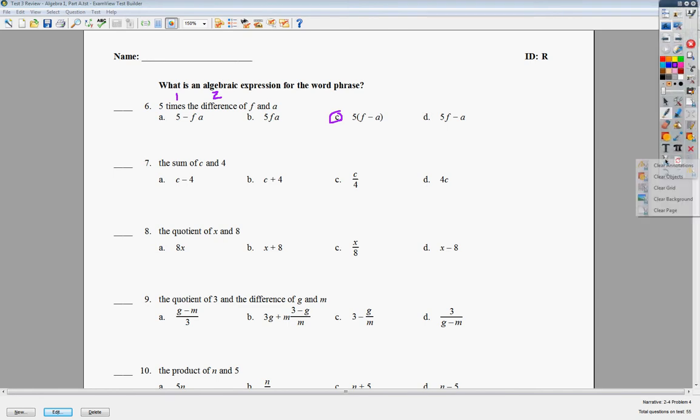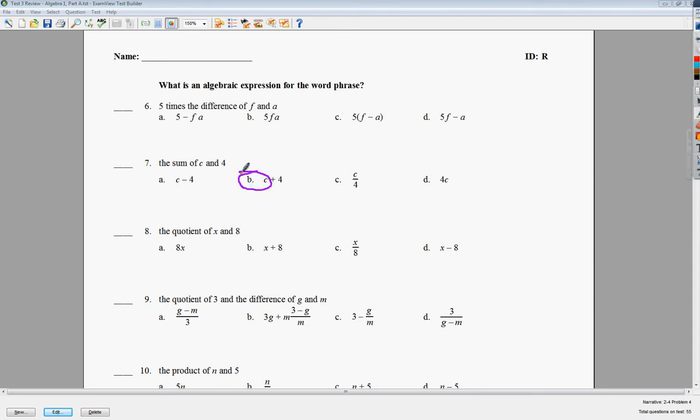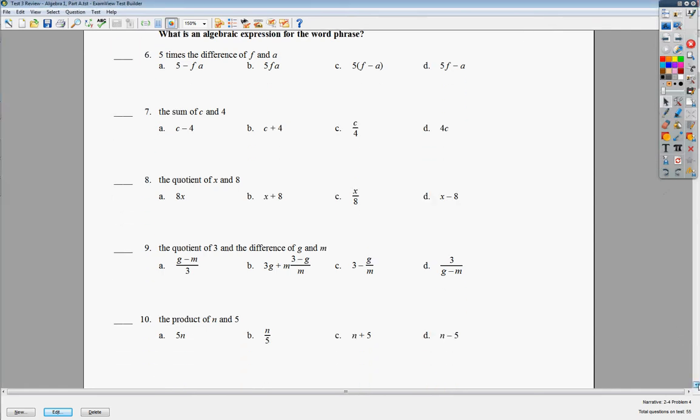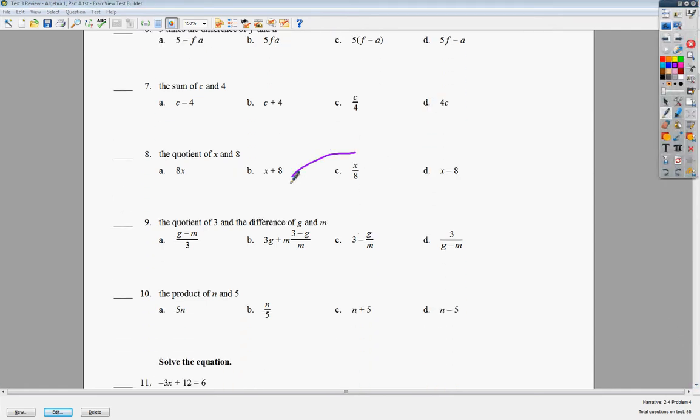For the next one, it says the sum of C and 4. Well, sum means add, because I've got some more. So, C plus 4. Number 8 is quotient. Quotient, if you forget, is the word for divide. So, I need to find the one that shows divide, which is, of course, C.